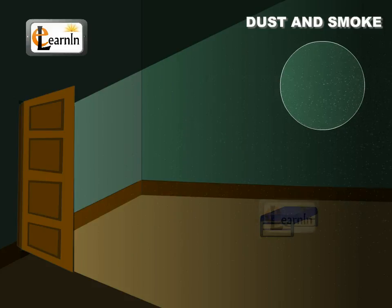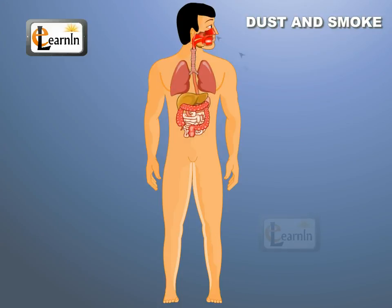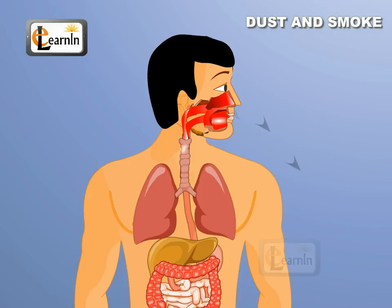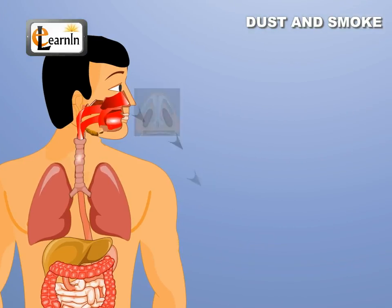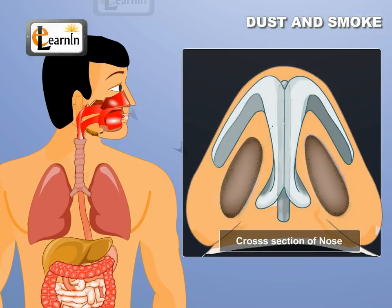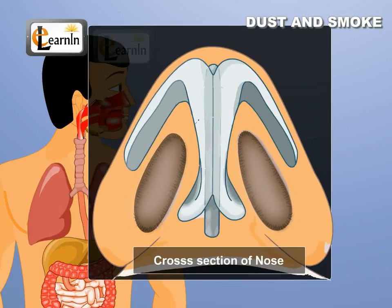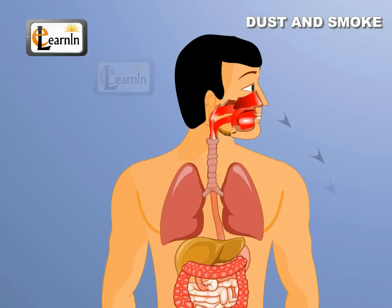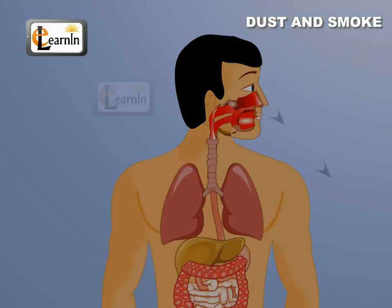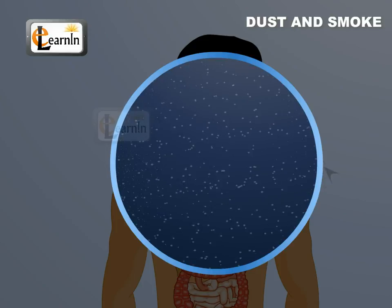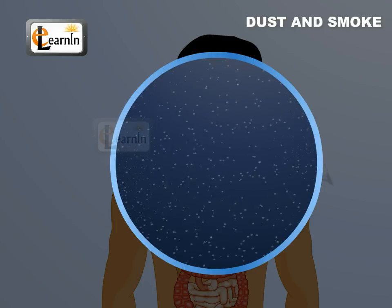Dust and smoke particles are inhaled by humans through the nose during respiration, but they are prevented from reaching the lungs as they are blocked in the nostrils by fine hair-like structures. This is one of the reasons why one shouldn't respire through the mouth. These particles are present in large numbers where there is a lot of pollution.